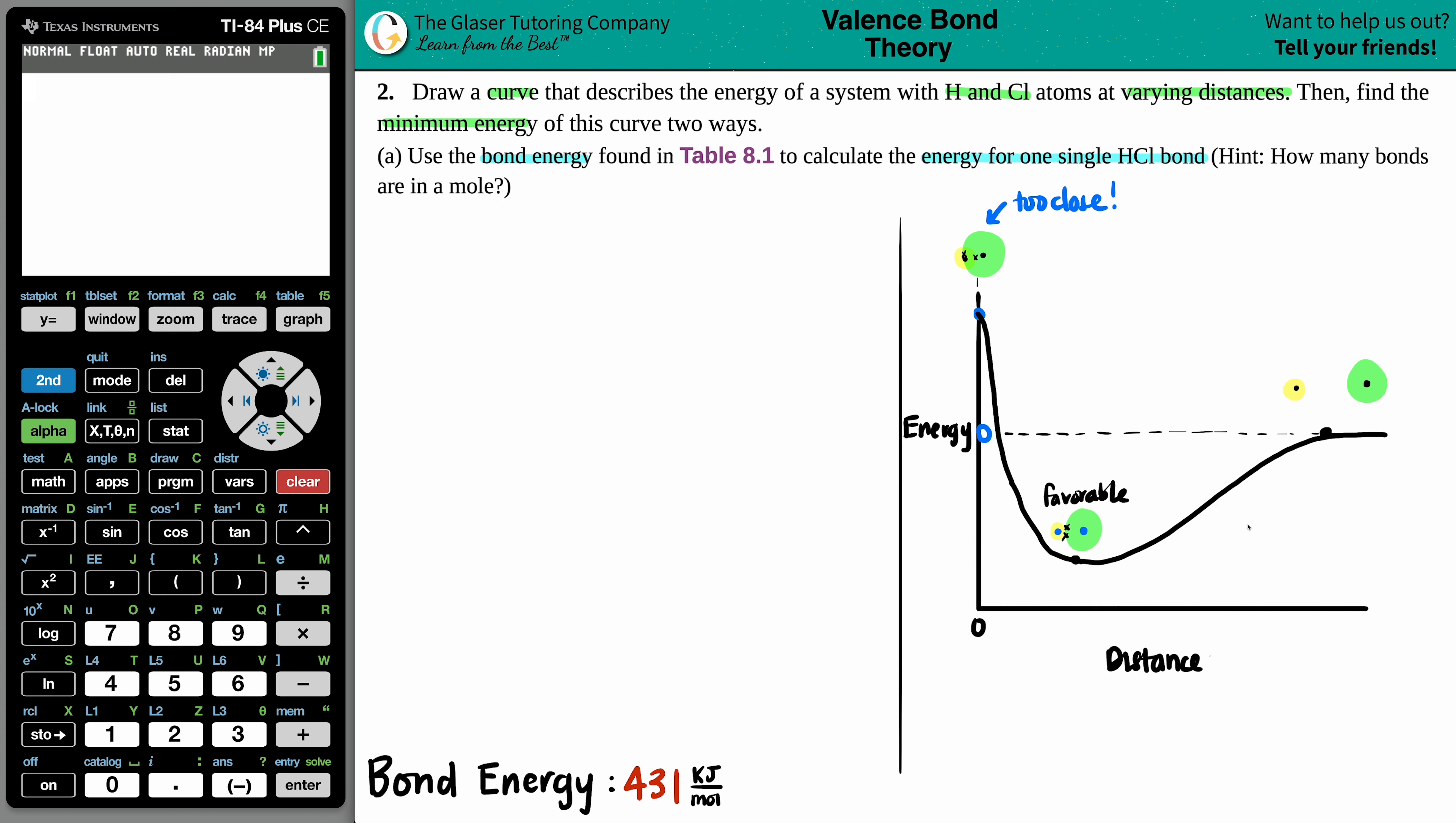The idea that it starts really high, swoops down low because that's the most favorable position and then goes back to zero. That's your curve that describes the energy system. So now let's actually do the calculation. So in this case, I'll just say separate units. Okay. So now we're going to use the bond energy found in table 8.1 to calculate the energy for one single HCl bond. Okie dokie. So in this case, I went to table 8.1 and I found out for HCl, the bond energy is 431 kilojoules per mole.